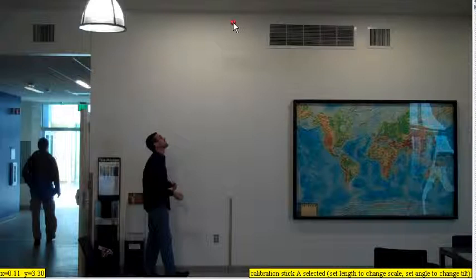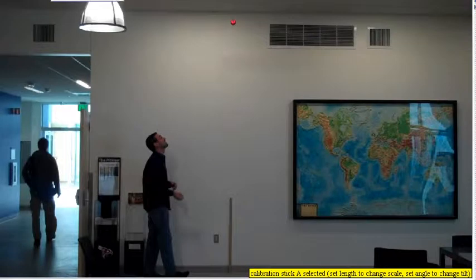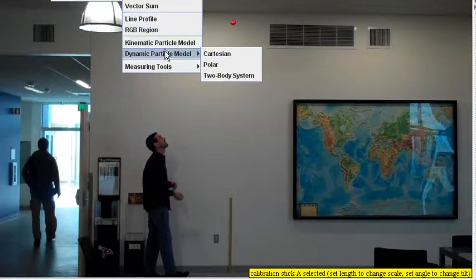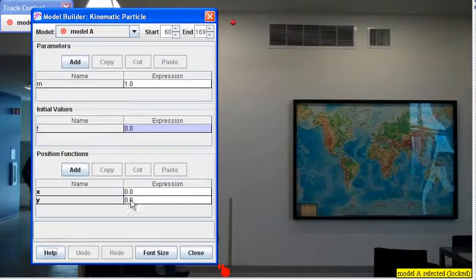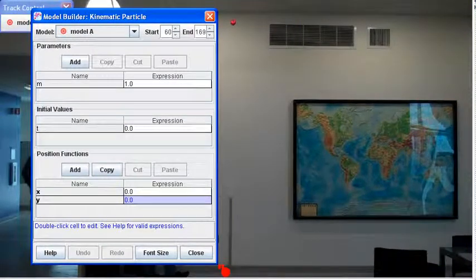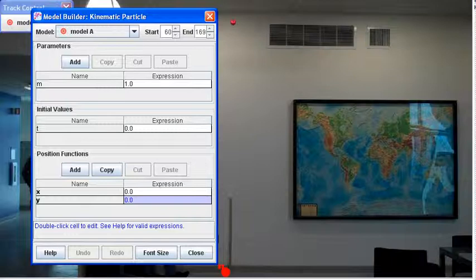So at the very highest, the ball hits a height of 3.3 meters. So now what we want to do is create a new model for the ball. Can we come up with an equation for the height y over time, where time equals zero is when the ball is released?